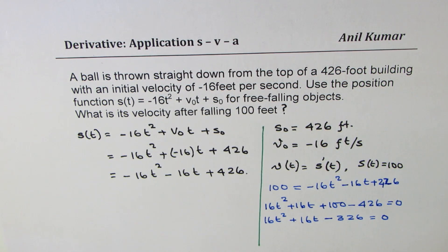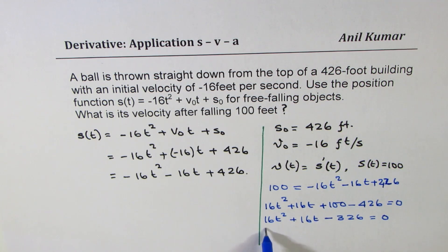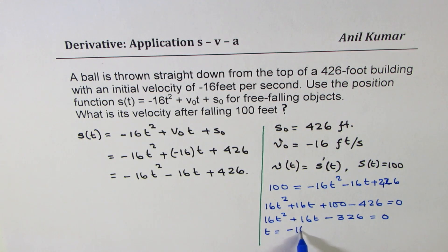So now you have to find time when the height is 100. How do you find time? One way is you could factor. The other way is you could use quadratic equation. Since the numbers are bigger, let's use quadratic equation. So we can say time t is equal to minus of this, which is -16 plus minus square root of 16² minus 4ac. So 4 times 16 times 326.